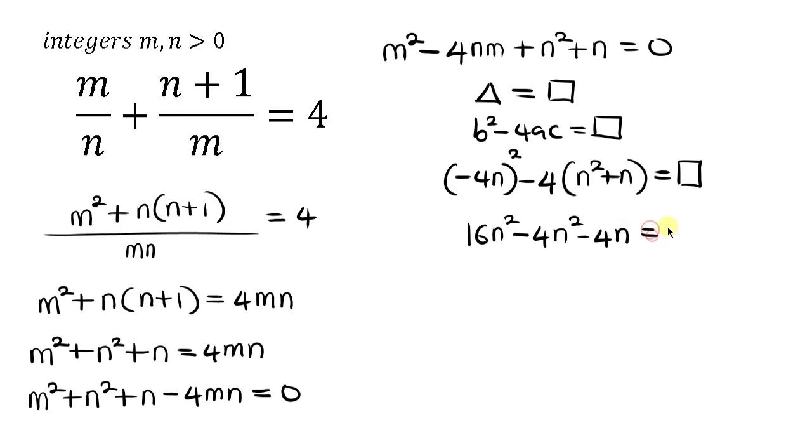Now 16n² - 4n² I'm going to be having 12n² minus 4n must be a perfect square.